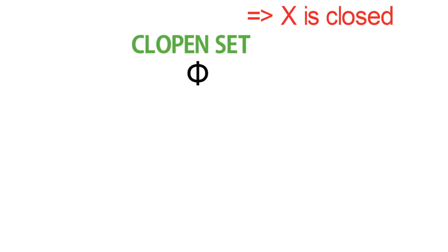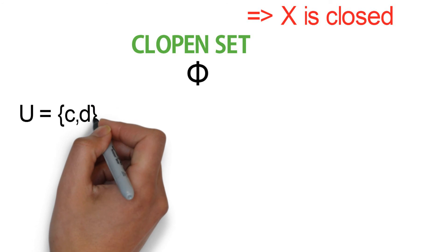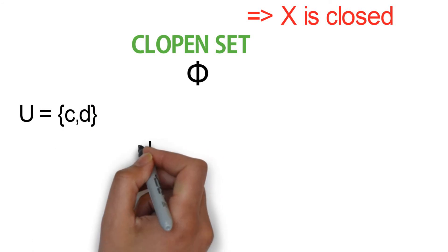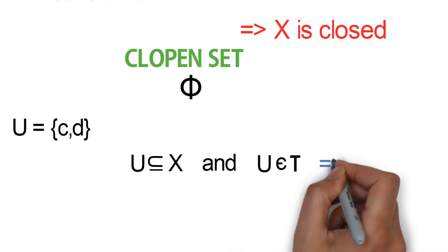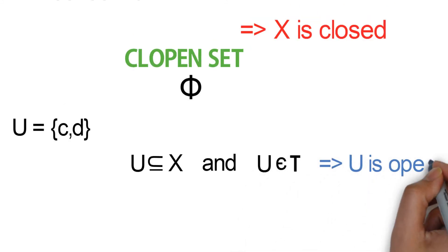Let's play around with another subset of X. Say U = {c, d}. We can see that U is a subset of X. And we can also see that U is a member of τ. So this implies that U is open.